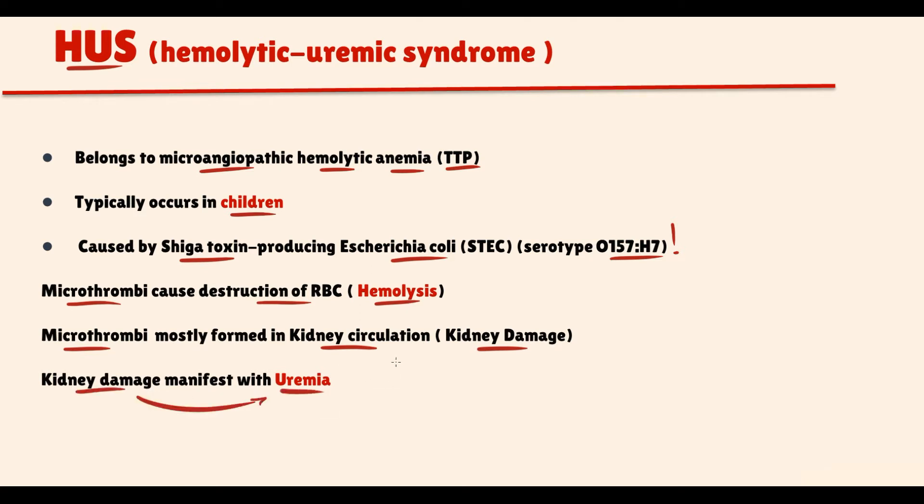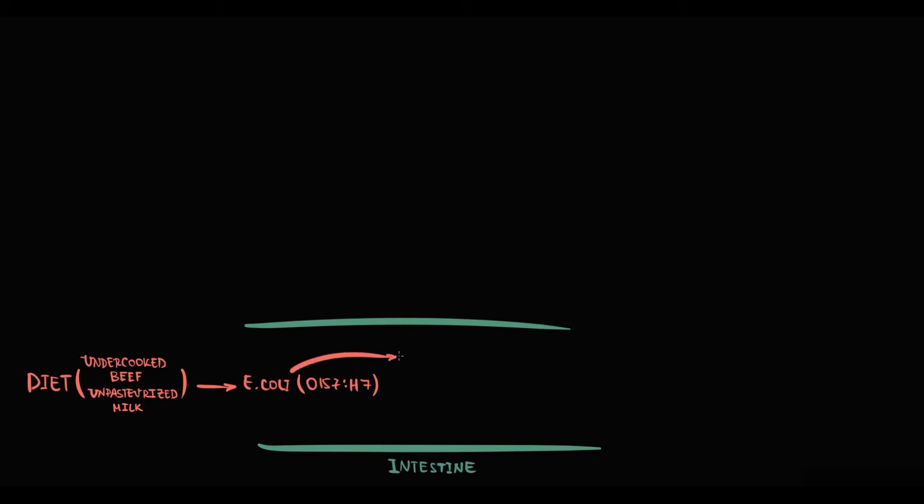Children have a very specific dietary pattern. The most common situation is that children consume undercooked beef or unpasteurized milk. There's a possibility these products contain a specific bacteria called Escherichia coli with serotype O157:H7. Escherichia coli enters the intestine where it begins to produce Shiga toxin, called Shiga toxin-producing Escherichia coli.